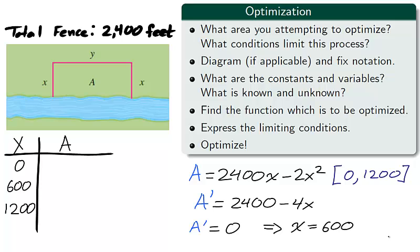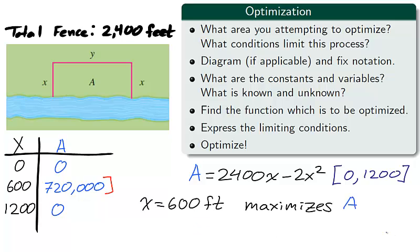The final step of the closed interval method is taking the critical number we found, x equals 600, and the two endpoints, 0 and 1200, and finding which one has the maximum value. When we evaluate A at the values 0, 600, and 1200, A becomes 0, 720,000, and 0. Therefore, we found the absolute maximum value of A. It happens when x is equal to 600 feet.